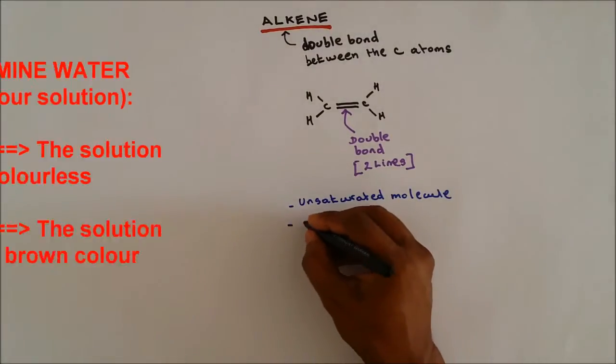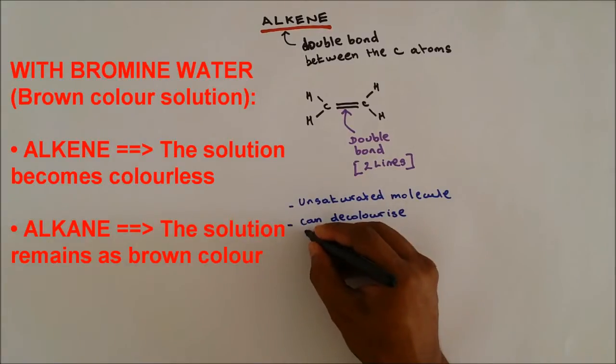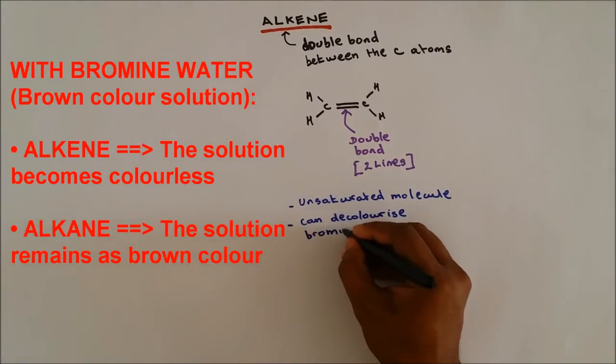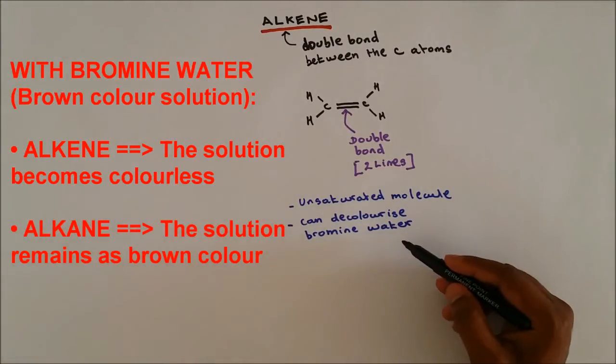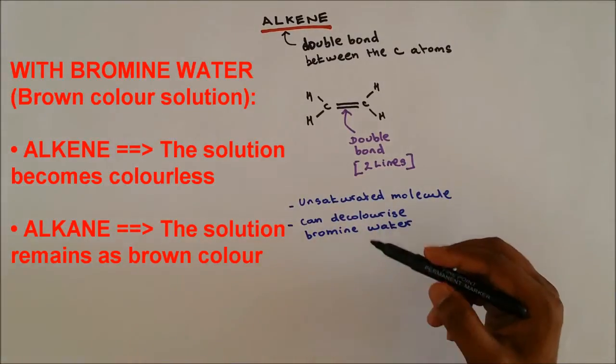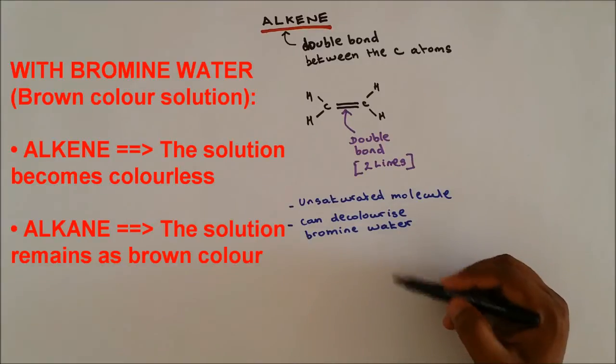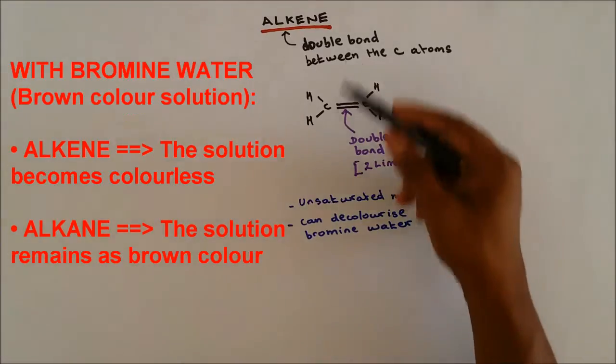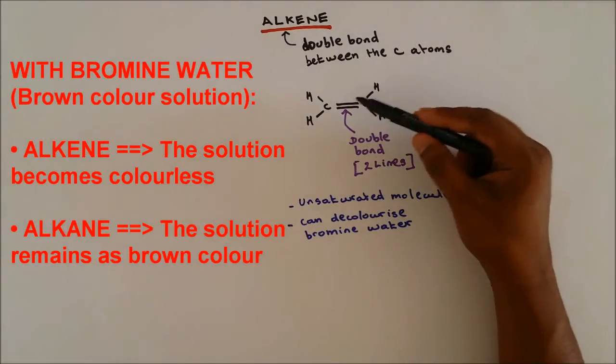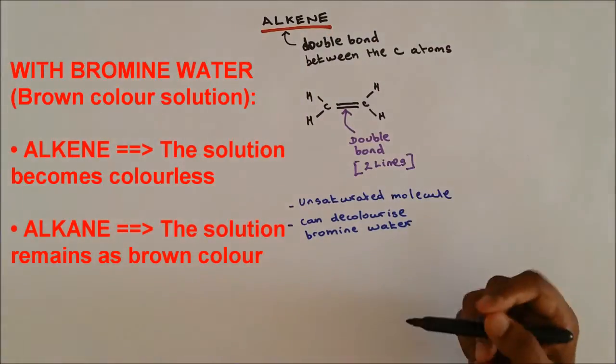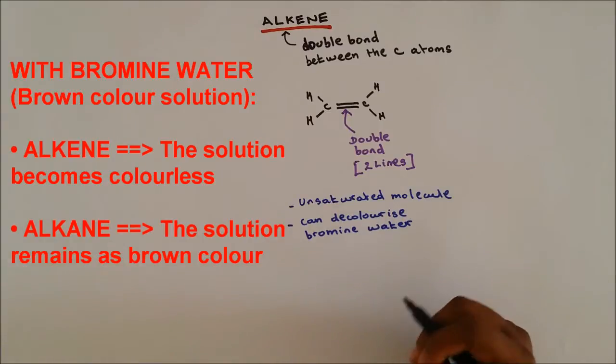It can decolorize bromine water, which is a brown color. When it reacts with alkene it becomes colorless. Hence alkene can decolorize bromine water due to its double bond, so alkene is reactive compared to alkane.